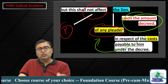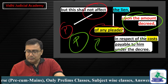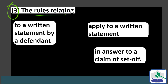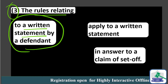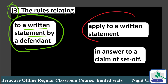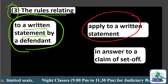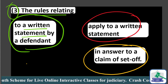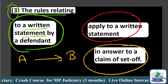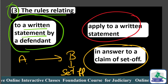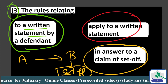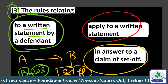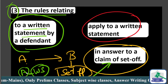The lien of the pleader shall not be affected — this is a question for prelims. And the third part of Rule 6: the rules relating to the written statement by the defendant apply to the written statement in answer to the claim of set-off.